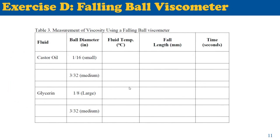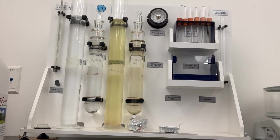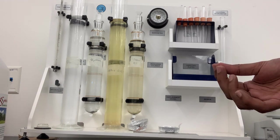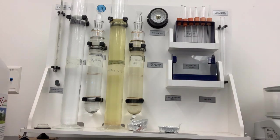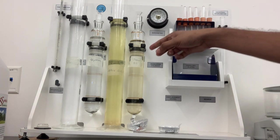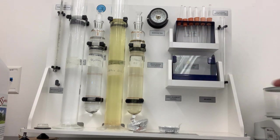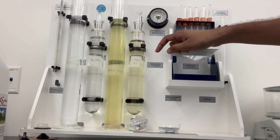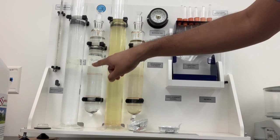In the last stage, using the falling sphere viscometer, we're going to drop balls through the viscometer and measure fluid temperature, fall length, and time. We'll use different sizes of balls, and both sizes will be passed through castor oil and glycerin. We'll use the 1/16th inch diameter ball first, dropping it through the falling sphere viscometer, doing the same for both the glycerin and castor oil viscometers.